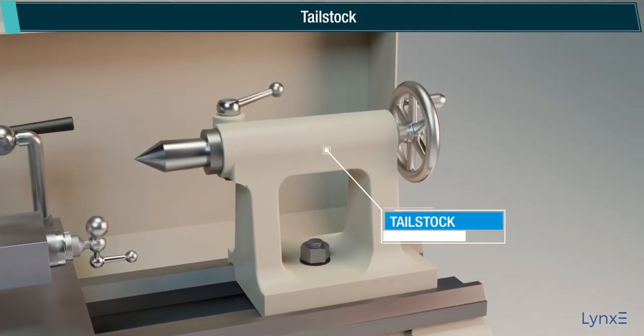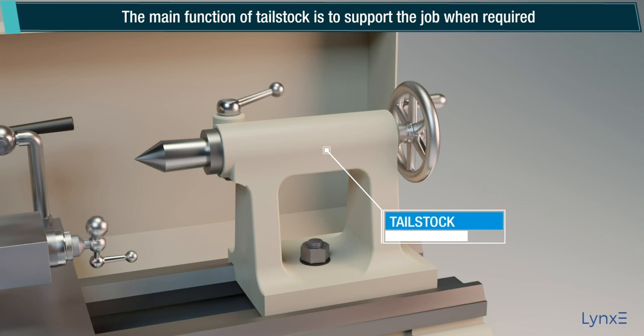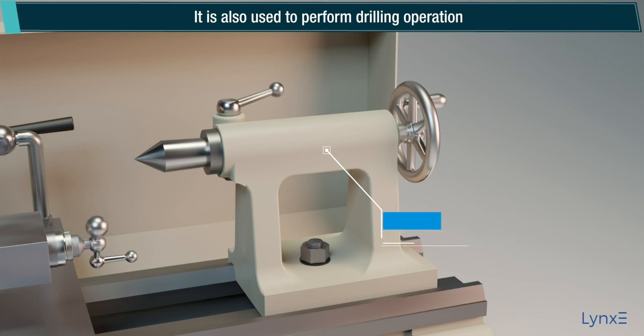Tail Stock: The tail stock is placed at the right hand side of the bed. The main function of the tail stock is to support the job when required. It is also used to perform drilling operations.